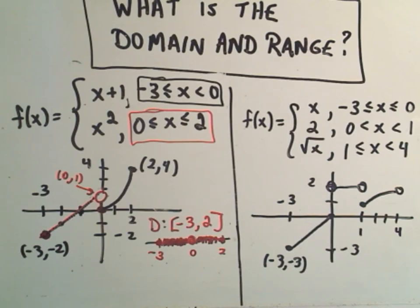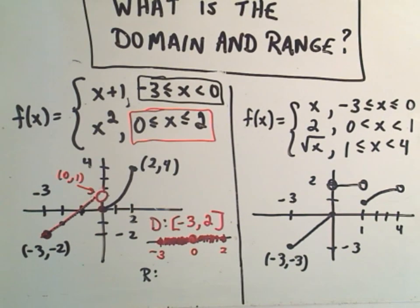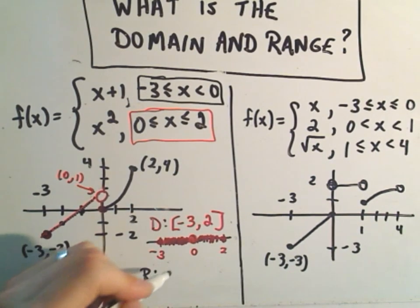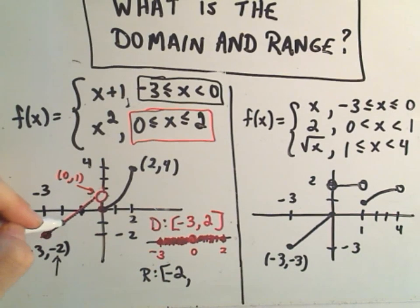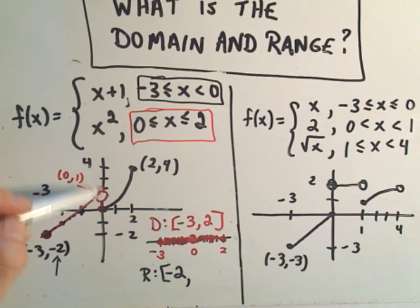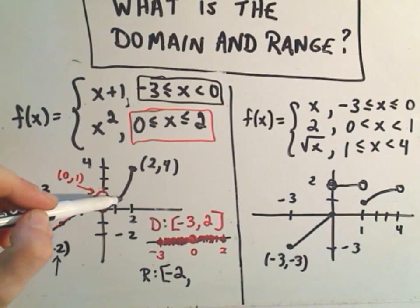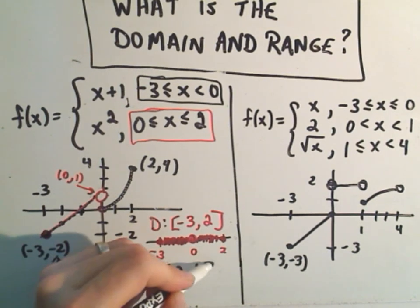For the range, you can simply look at all the y-coordinates that are getting used. This is a little harder — it's usually best to have a graph. It looks like the smallest y-coordinate that ever gets used is the value of negative 2, and then it uses everything up to but not including the y-coordinate of 1. If you look at the other piece, it actually includes the value 0, and it does finally include the value 1, and then it continues up to the largest y-value of 4.